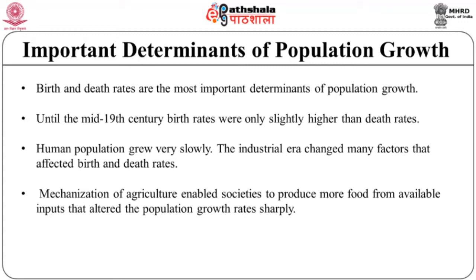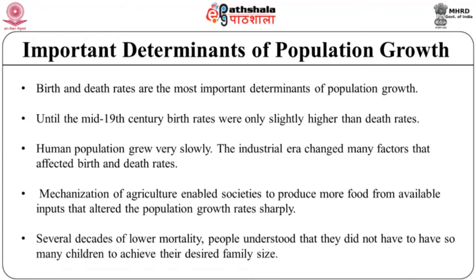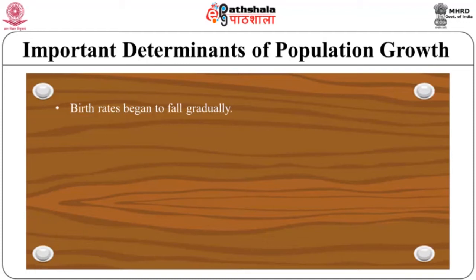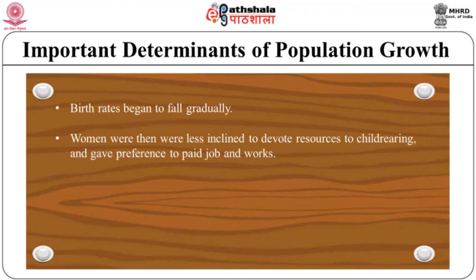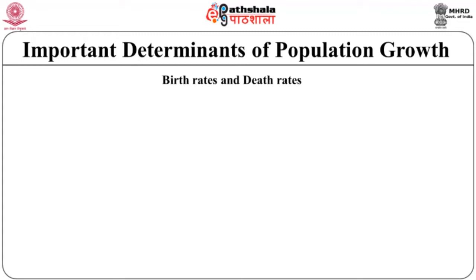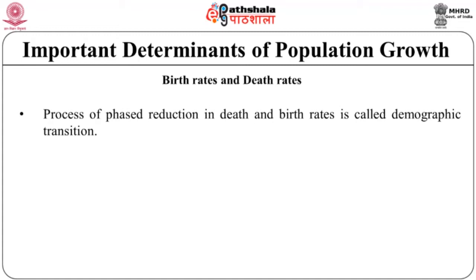Improvements in medical care and public health services — more in urban than rural areas — also helped people live longer, so death rates fell. After several decades of lower mortality, people understood they did not need to have so many children to achieve their desired family size, so birth rates began to fall gradually. Women became less inclined to devote resources to childbearing and gave preference to paid work, as the cost of raising children also increased. This process of phased reduction in death and birth rates is called demographic transition.